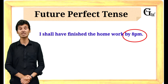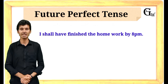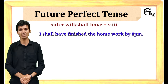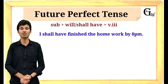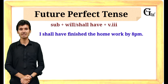Now let's move forward and learn how we construct sentences. We put the subject, then 'will have' or 'shall have', and after that the third form of the verb, which we call the past participle. For example: